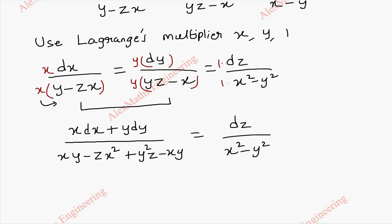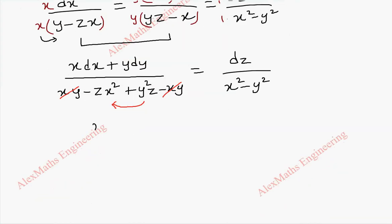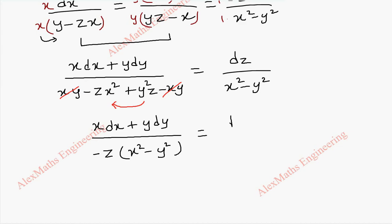Adding the denominators by multiplying x inside gives xy minus zx square, plus y square z minus xy. This equals dz by x square minus y square. We can cancel xy minus xy. Taking minus z as a common factor, the remaining expression becomes minus z times x square minus y square.